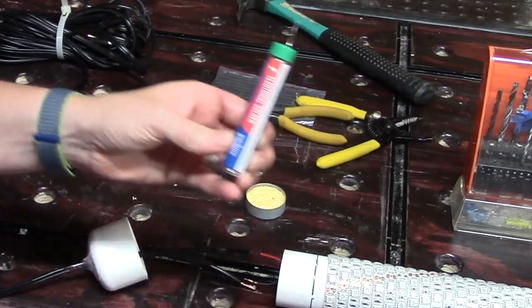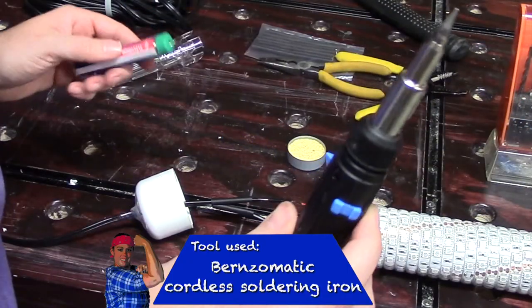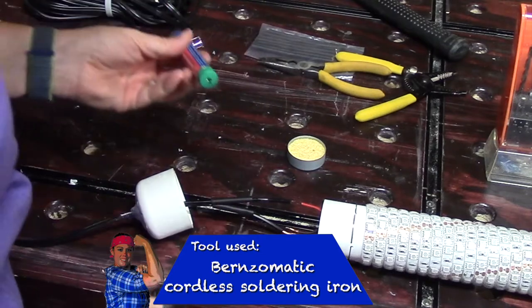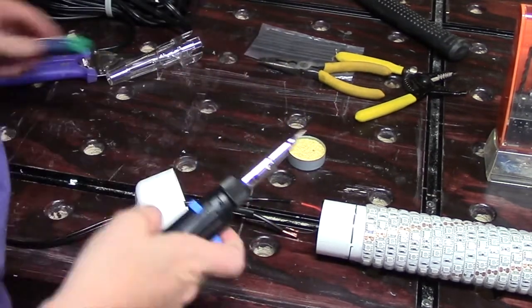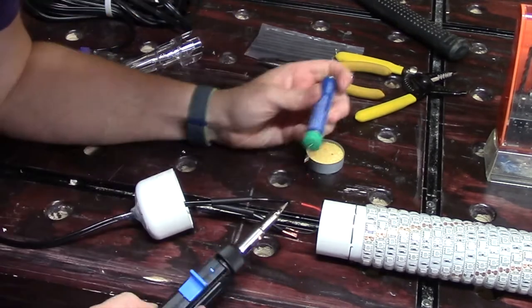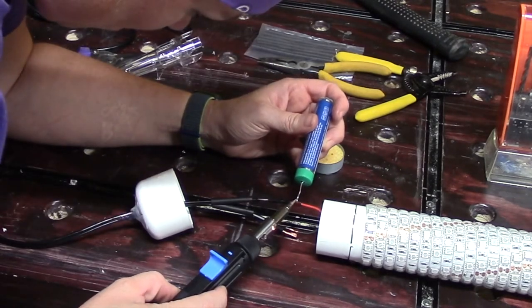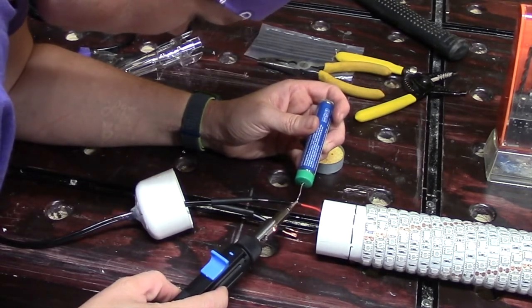We are going to use electrical solder and a soldering iron to attach these two wires. They do make waterproof crimp kits that you can use to attach these two wires if you would prefer. I believe soldering is a stronger connection though.